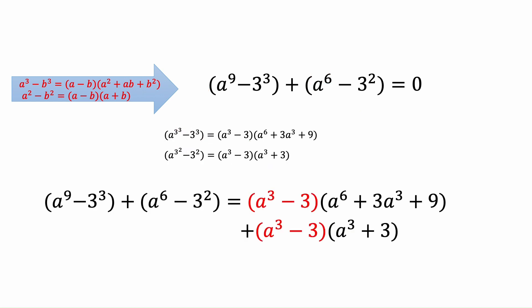Now we can write this equation as the summation of these two multiplications that we found. And now if we see it closely, we can see both of them has a to the power 3 minus 3. So we can factor this part out. So we factorize a to the power 3 minus 3 from both sides.